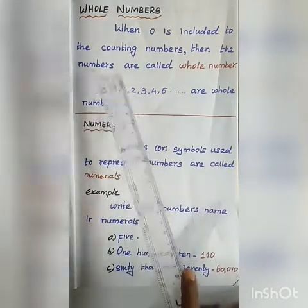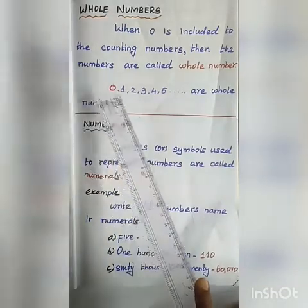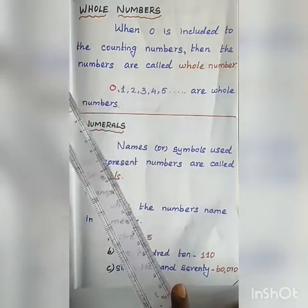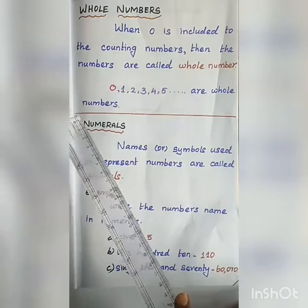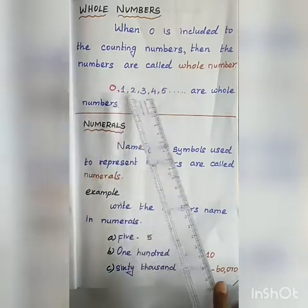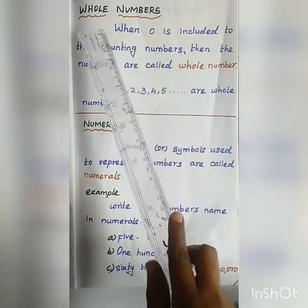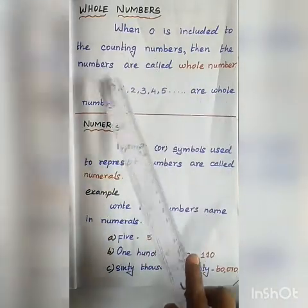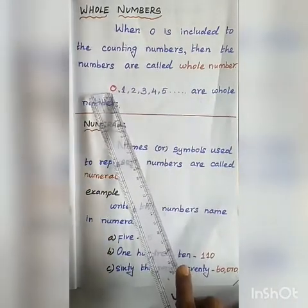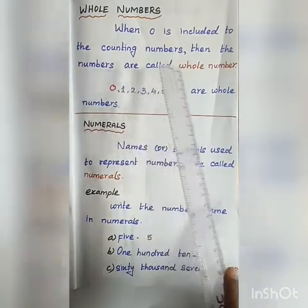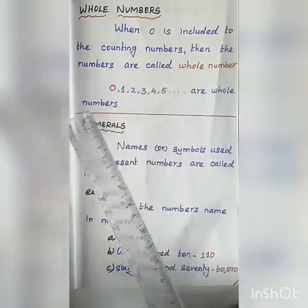What is the difference between natural and whole numbers? Natural numbers start with 1, 2, 3 and going on. Whole numbers start with 0, 1, 2, 3 and going on.